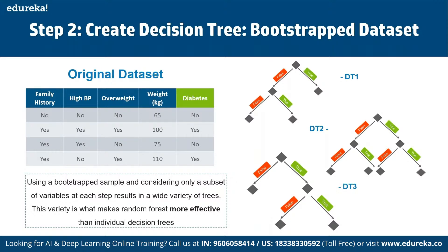Using a bootstrap sample and considering only a subset of variables at each step results in a wide variety of trees, and this variety is what makes random forest more effective than individual decision trees.